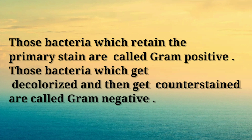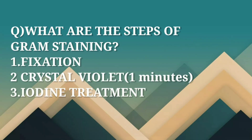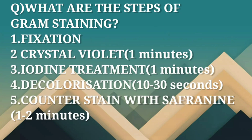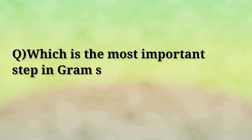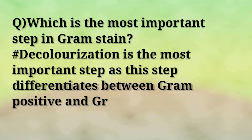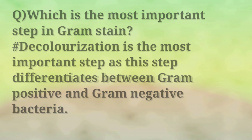Question: What are the steps of gram staining? Answer: First fixation, then crystal violet, iodine treatment, decolorization, and then counter-stain with safranin. Next: which is the most important step in gram staining? Answer: Decolorization is the most important step, as this step differentiates between gram positive and gram negative bacteria.